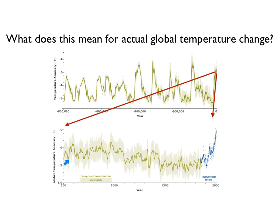If you look at our global temperature anomaly for just the past 1,500 years, you can see there's not much deviation until you actually hit 20th century warming. When you see 'instrumental record,' that means it's from direct measurements of temperature, versus proxy-based reconstructions, which use things like tree rings, ice cores, or sediment cores to infer what past temperature was like.